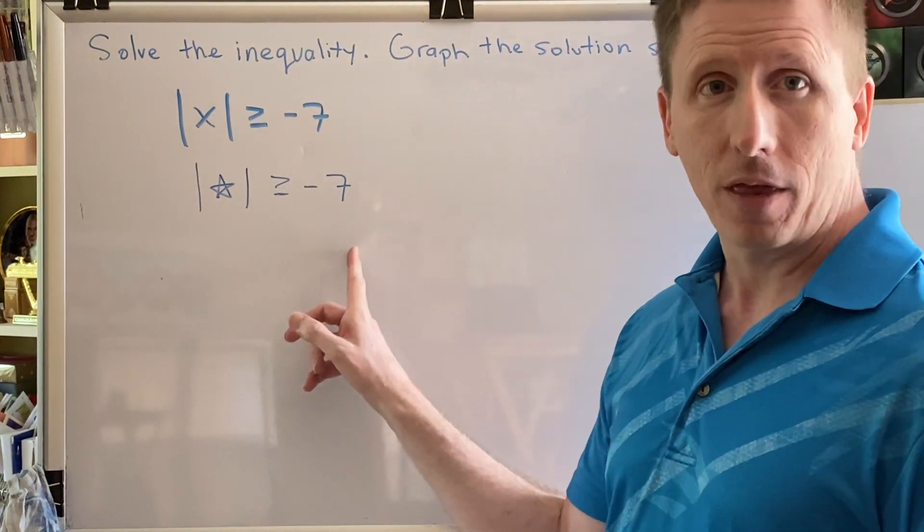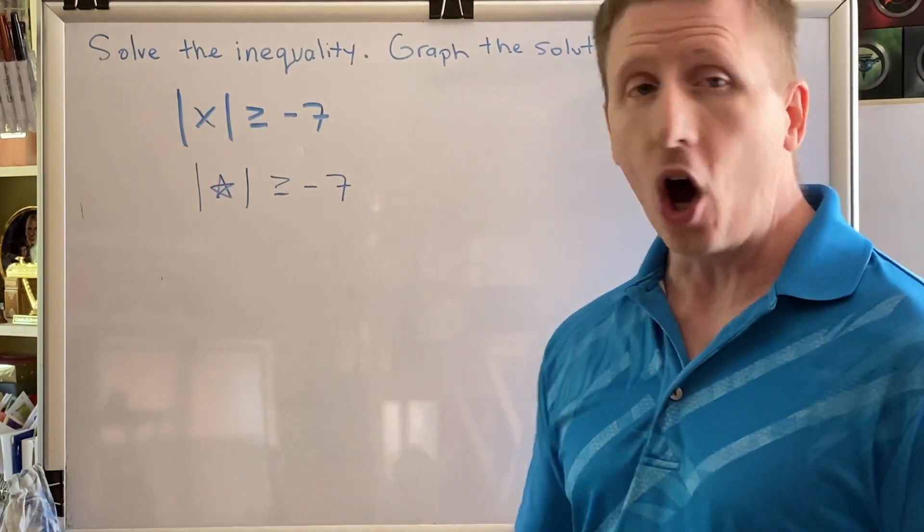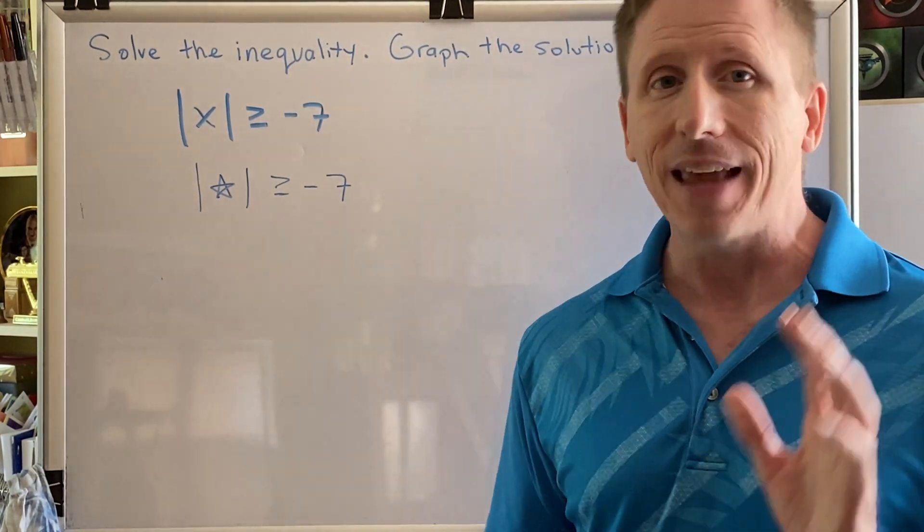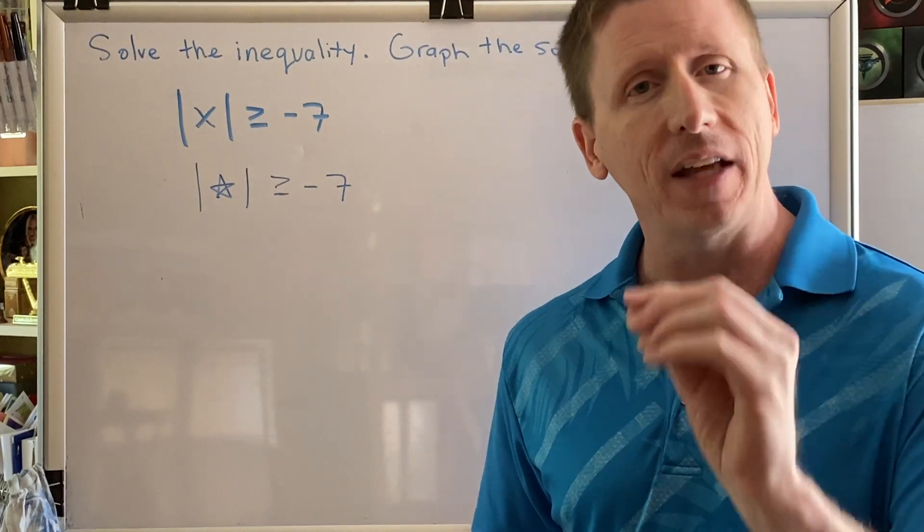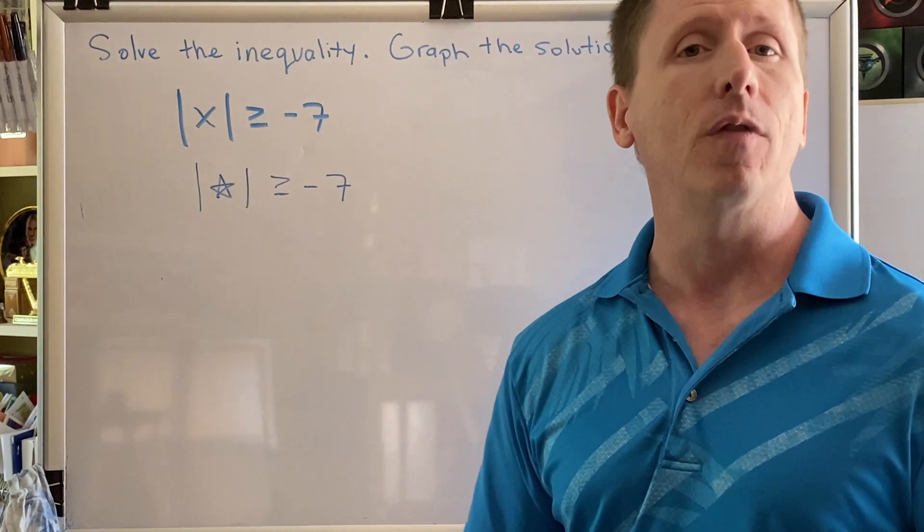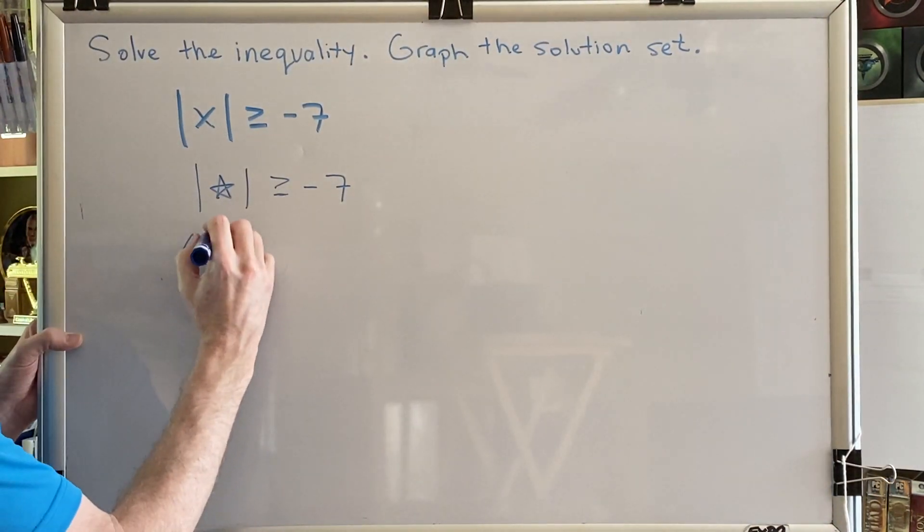Zero is bigger than a negative. Positive is bigger than a negative. So our conclusion is star can be anything. It can be any real number because any number that you choose, when you take the absolute value, you'll get a result that is bigger than negative 7. So the answer to this question is all real numbers.